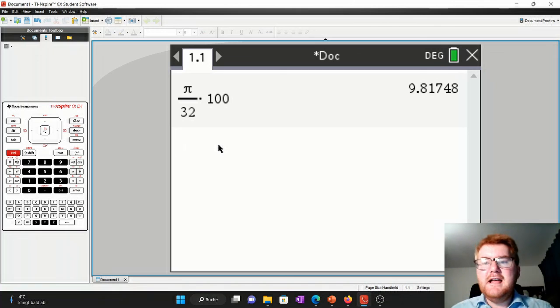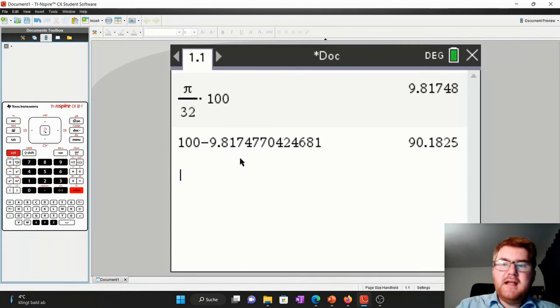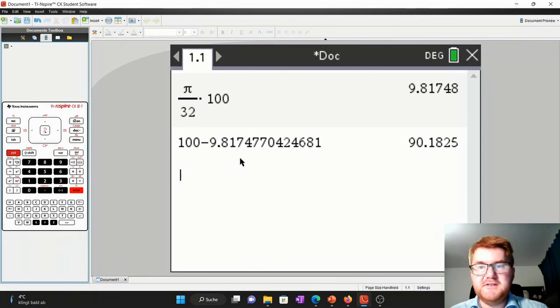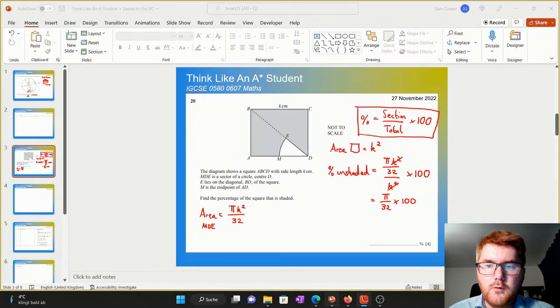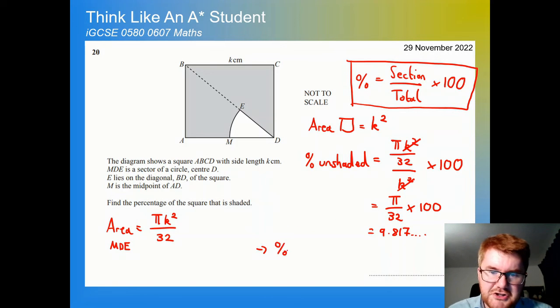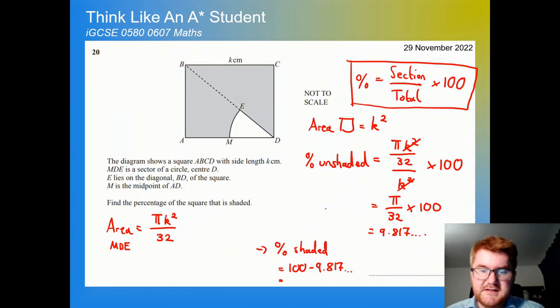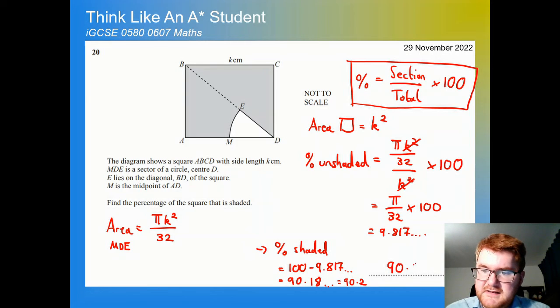So this is where we do need the calculator in order to work that out. So I put this into my calculator, giving me 9.817. However, that is the percentage unshaded and I want the shaded part. So we need to do 100% minus our answer. Now most calculators have this option, control answer, and that will then get to the final answer there of 90.2%. Let's just write in our working, making sure we get all the marks. So we have first of all 9.817 dot dot dot, and therefore percentage shaded is equal to 100 minus 9.817 dot dot dot. If we work that out, it's 90.18, so 90.2 to three significant figures.